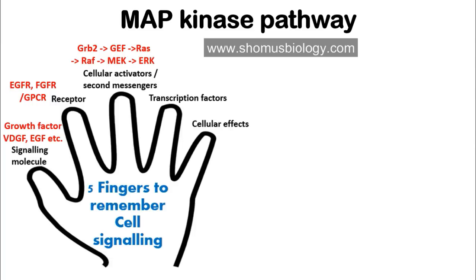Once RAS gets activated, RAS activates RAF, RAF activates MEK, and MEK activates ERK. RAF is also known as MAP Kinase Kinase Kinase, MEK is known as MAP Kinase Kinase, and ERK is known as MAP Kinase — that's why we call it the MAP kinase pathway. So the sequence is: GRB2, GEF, RAS, RAF, MEK, and ERK.